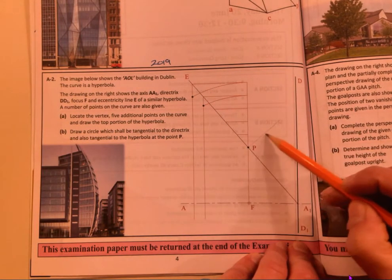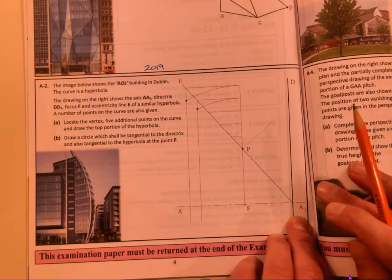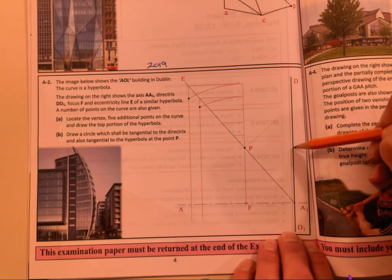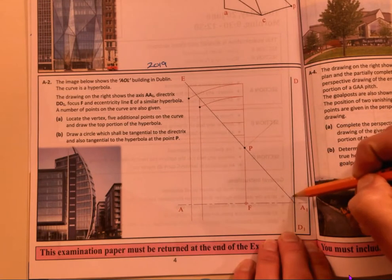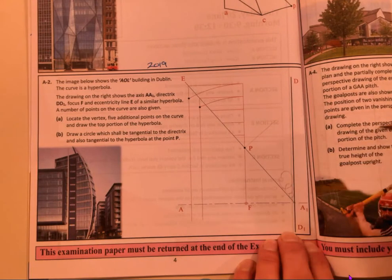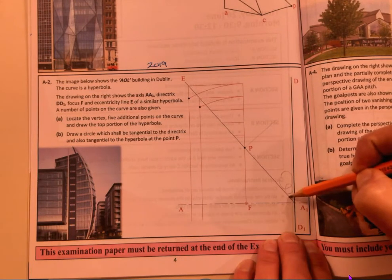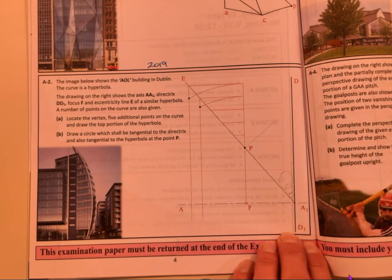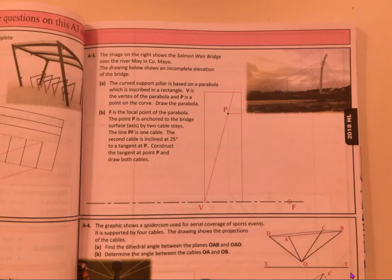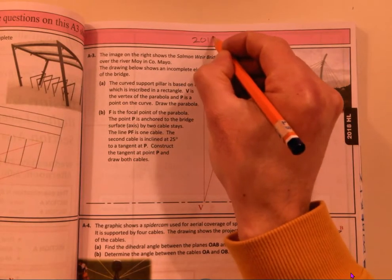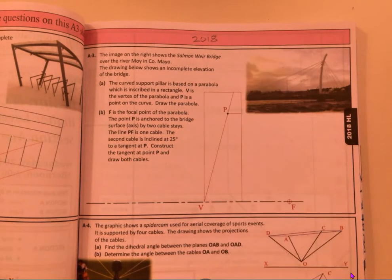It also has to touch this line at the same time as it touches this line. So for example, those are examples of circles that are touching the two lines at once, and they're getting bigger and bigger. See if you can figure that out. That's 2019 question. This is the 2018, so 2018 A3, short question again.